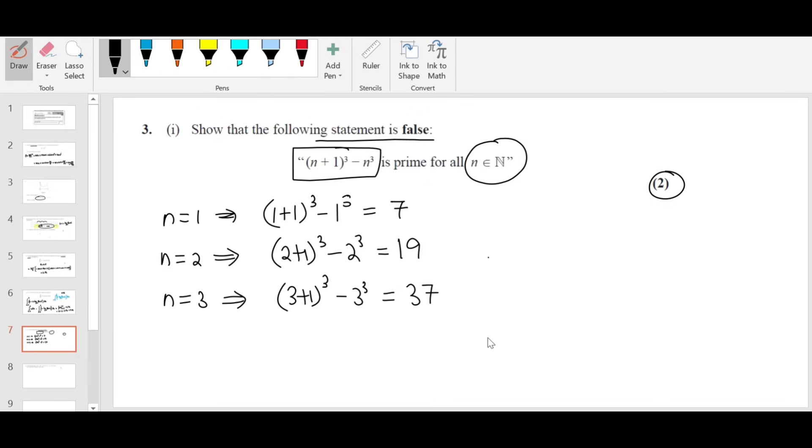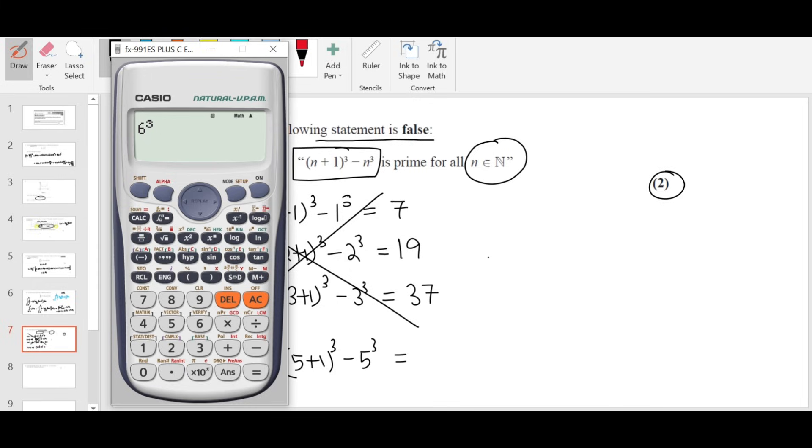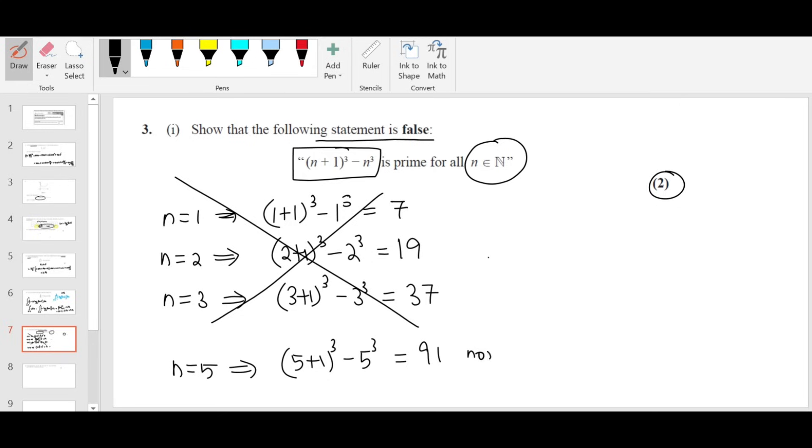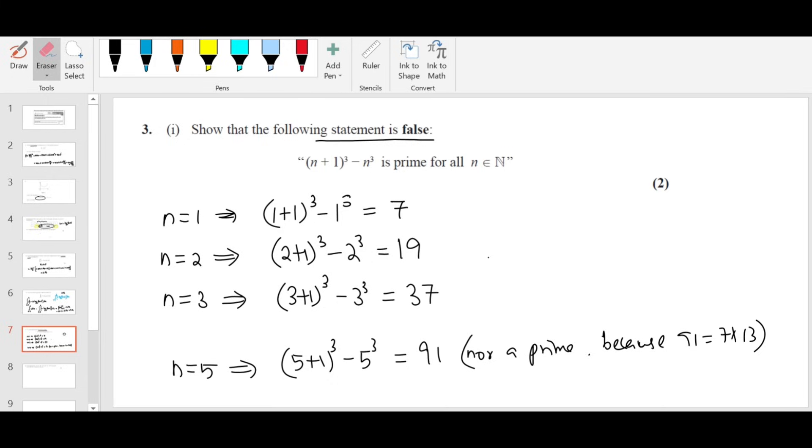In fact, you don't need to show all this. You can straightaway write when n is equal to 5: 5 plus 1 whole cube minus 5 cube equals 6 cube minus 5 cube equals 91, because 91 is 7 times 13. Since I have written n equals 1, 2, 3, you don't need to cross it out. Just leave it as it is. So now you need to write the conclusion. Therefore, the statement is not true when n is equal to 5. For questions from proof, you have to write the conclusion. Otherwise, you will lose marks.